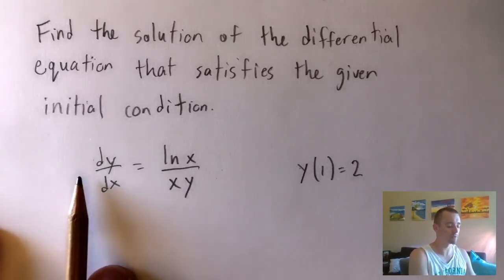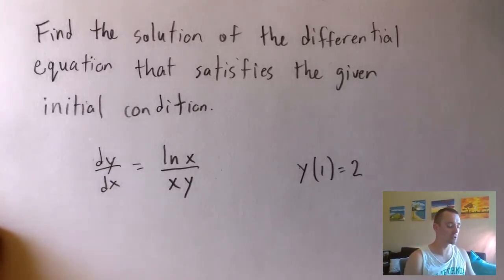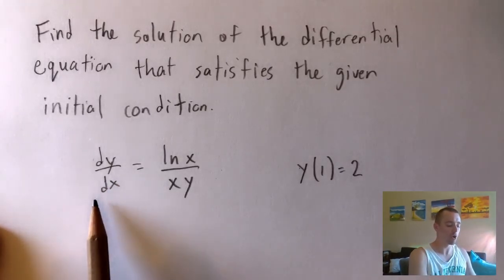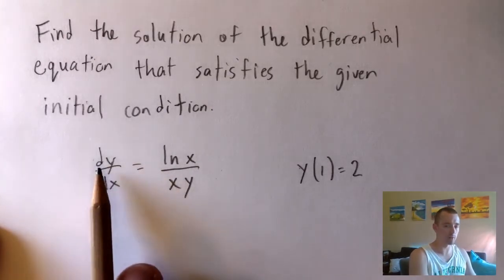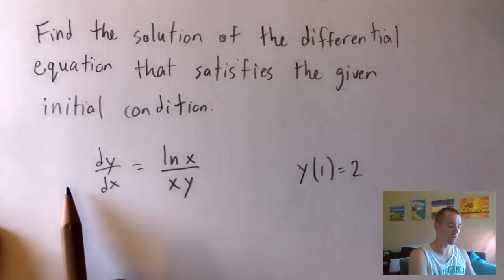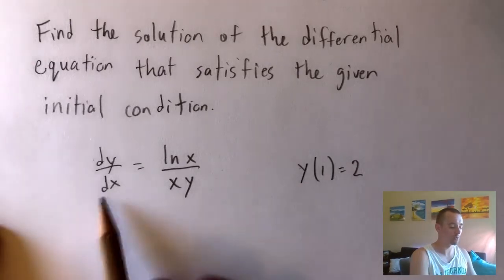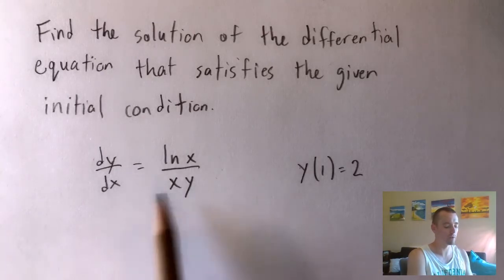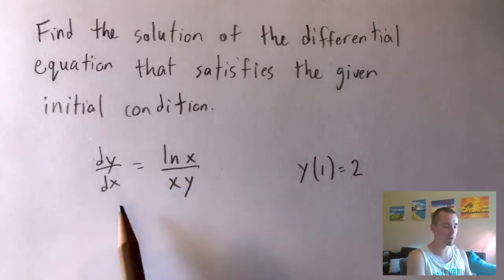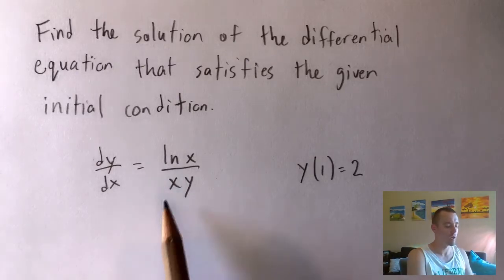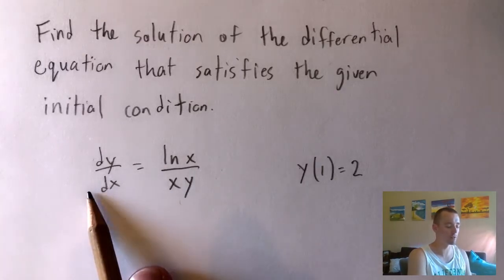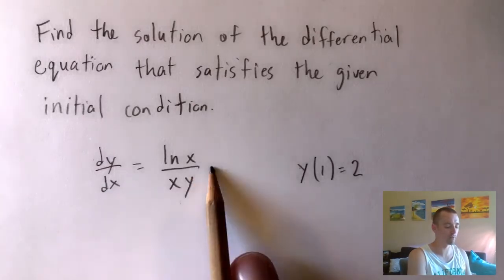The reason we know this is because it's going to be much easier to move whatever is on the bottom — in this case dx — over to the right side, and leave whatever is on top — in this case dy — on the side it's already on. So we want to move all our x's to the right; the only x we need to move is this one. The rest of the x's are already there, and we want to move this y over to the left side.